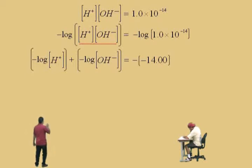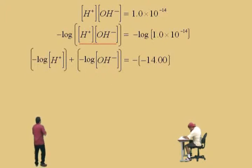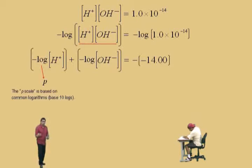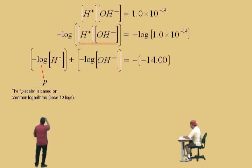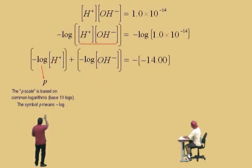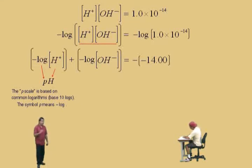Now let's talk about something called the p-scale. The p-scale is used generally when you have small numbers. The negative log is represented by the symbol p — this gives us what we call the p-scale, based on common logarithms, or log base 10. So the symbol p actually means negative log: when you see p, you think negative log. We're going to let the hydrogen ion concentration be represented by H, so pH actually means the negative log of the hydrogen ion concentration. That's what pH is — it's on the p-scale.